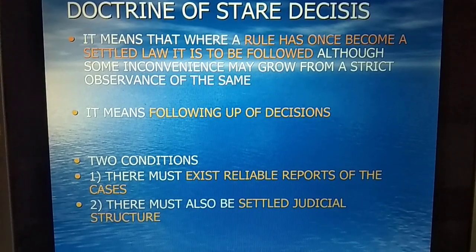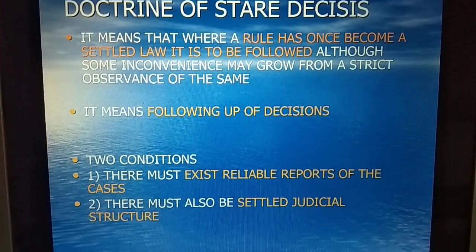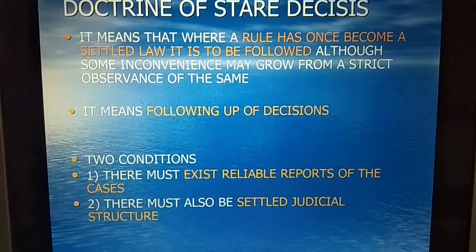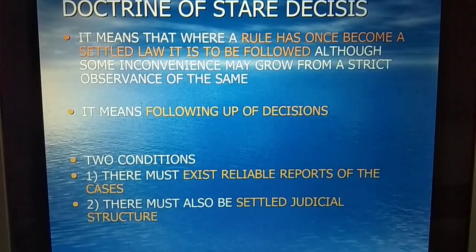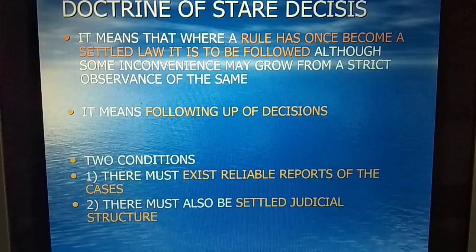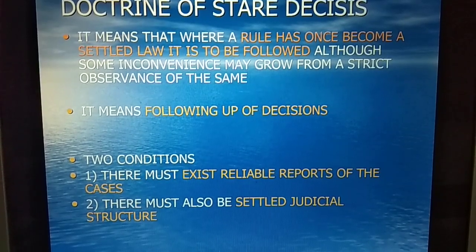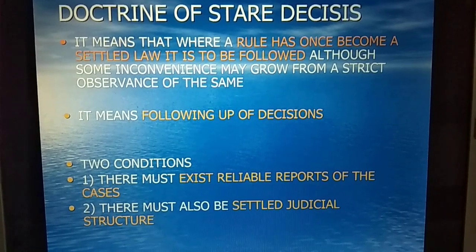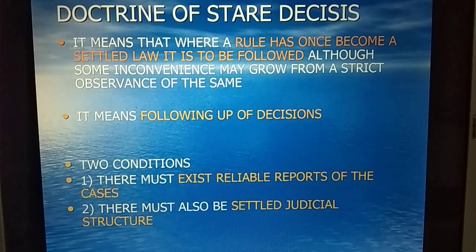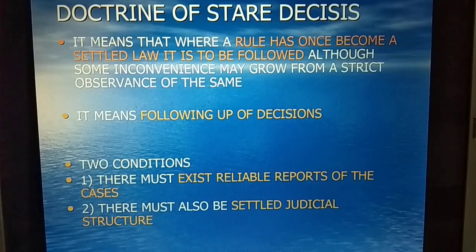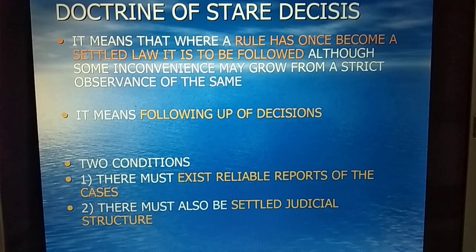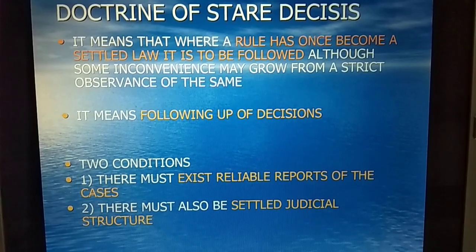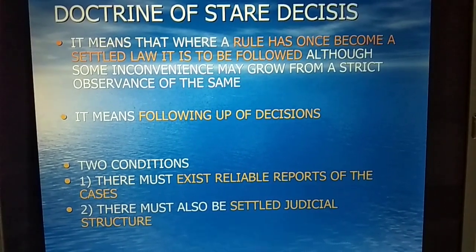Two conditions: first, there must exist reliable reports of the case; second, there must also be settled judicial structures. This doctrine means that where a rule has once become a settled law, it is to be followed although some inconvenience may grow from a strict observation of the same. Thanks, here we conclude this session.